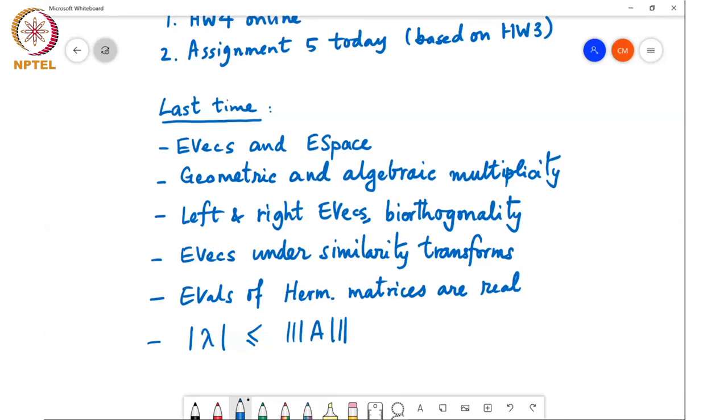Essentially, the new eigenvectors become S times the old eigenvector. Also, we saw that if you take a real symmetric matrix or a complex Hermitian matrix, its eigenvalues are always real.